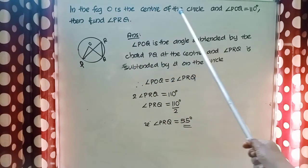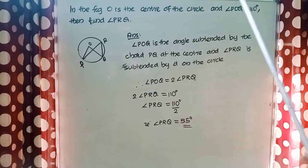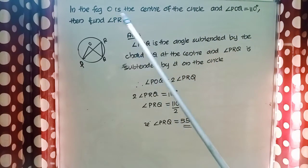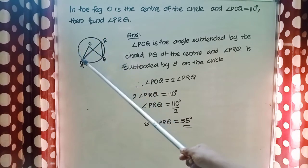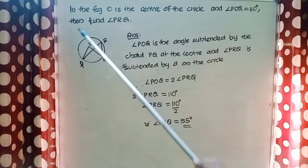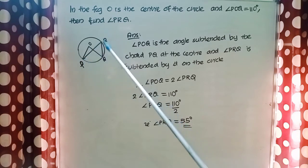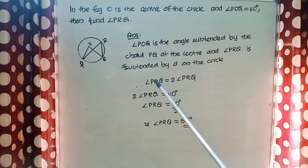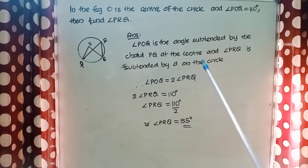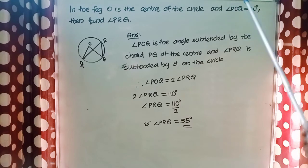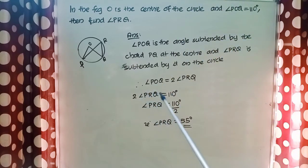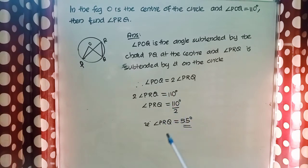In the figure, O is the center of the circle and angle POQ equals 110 degrees. Find angle PRQ. Angle POQ is subtended by arc PQ at the center, and angle PRQ is subtended by the same arc on the circle. By theorem, angle POQ equals 2 times angle PRQ. So 2 times angle PRQ equals 110 degrees, therefore angle PRQ equals 55 degrees.